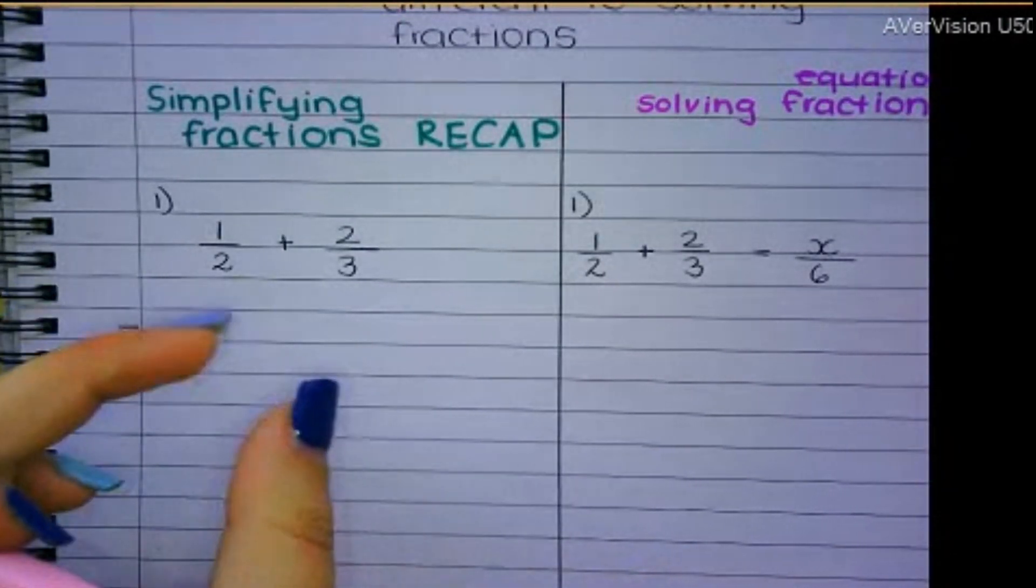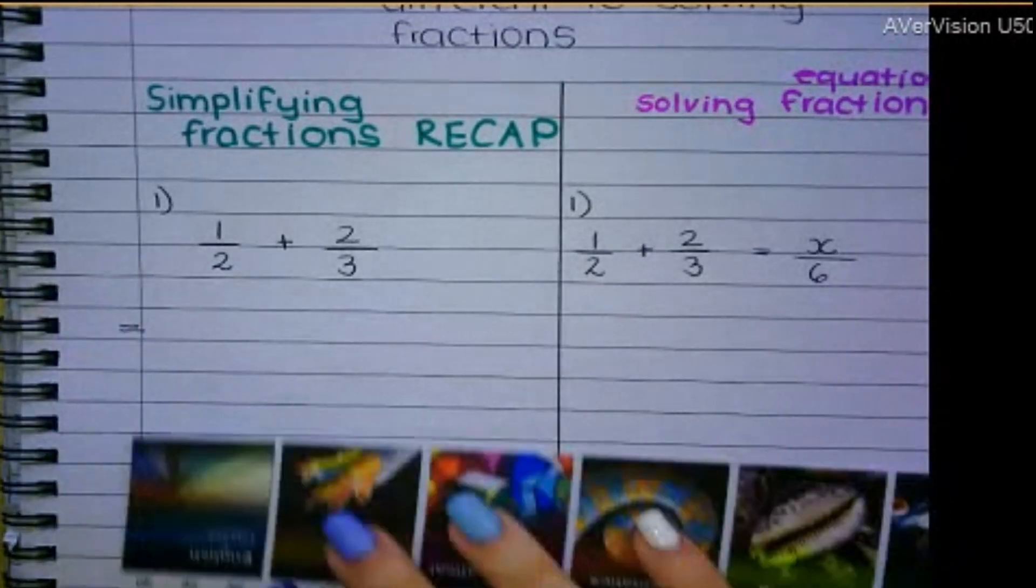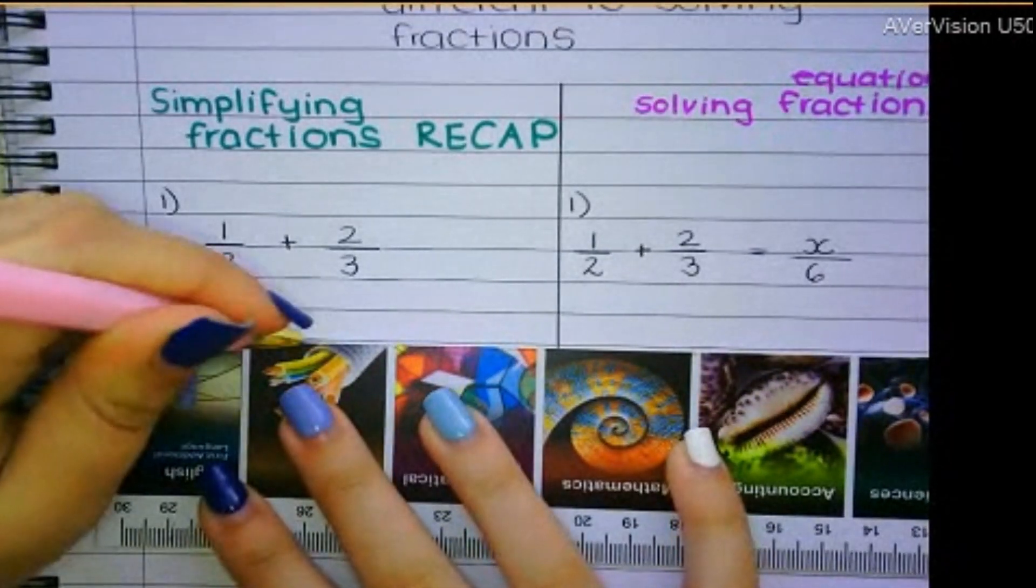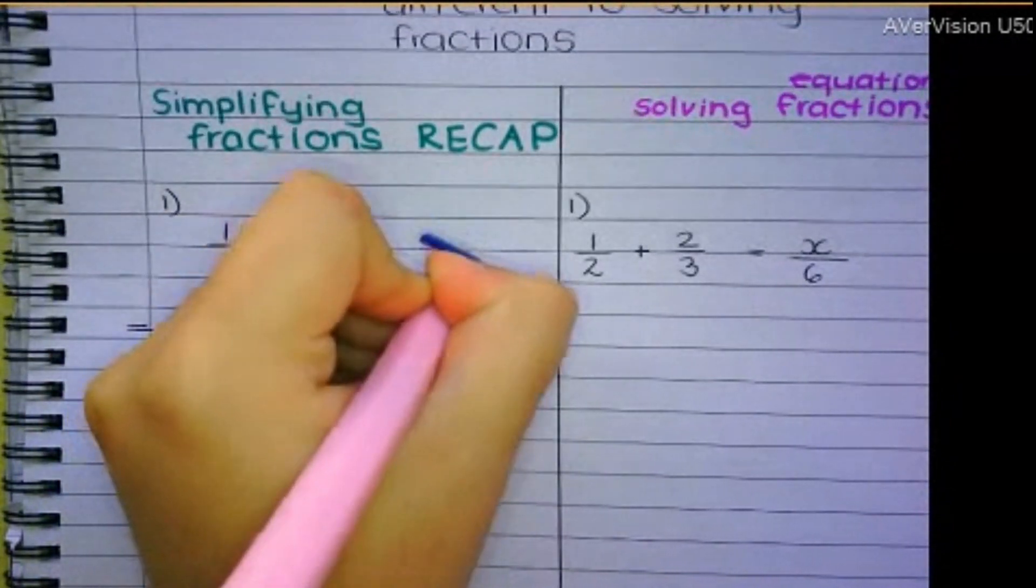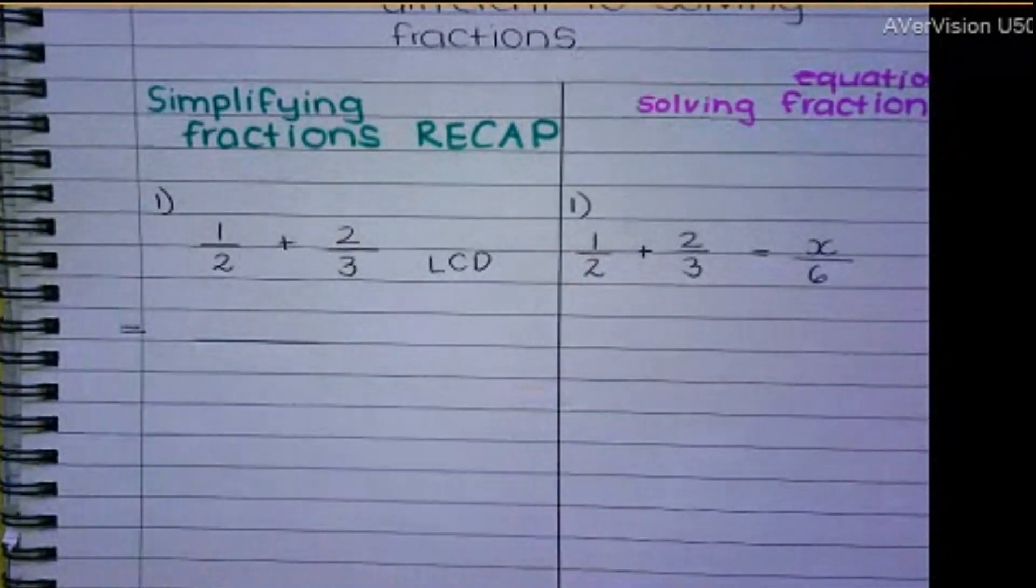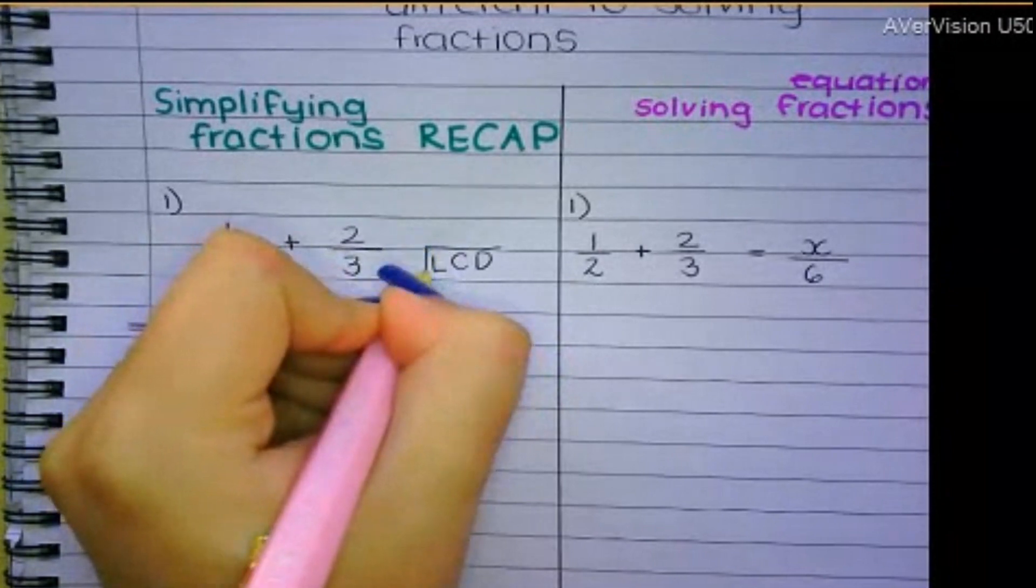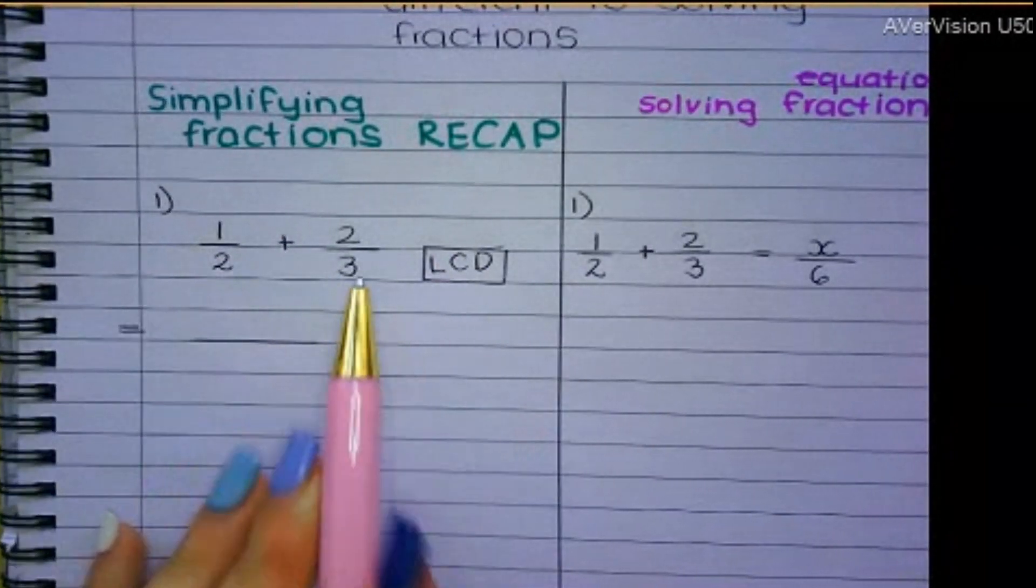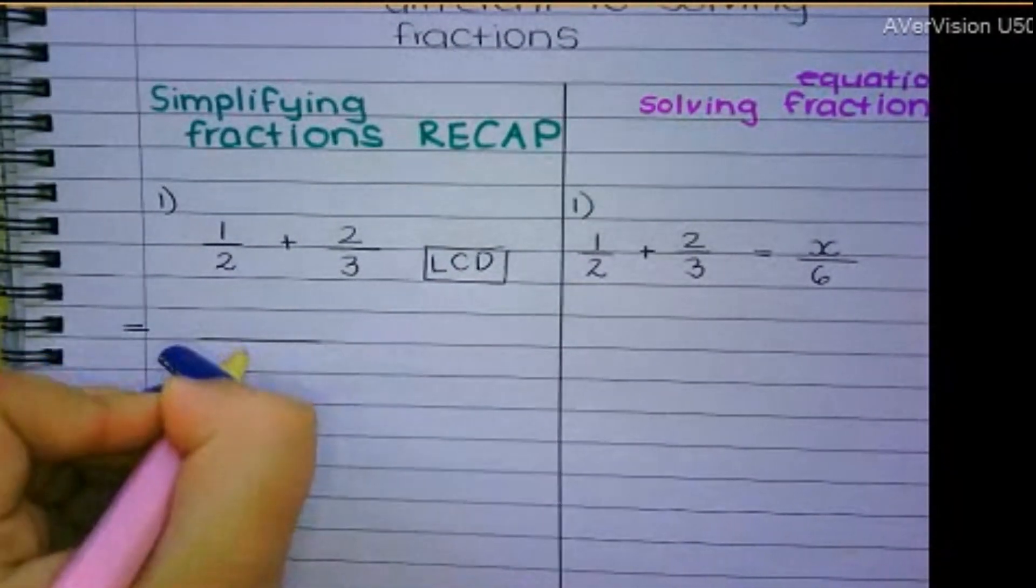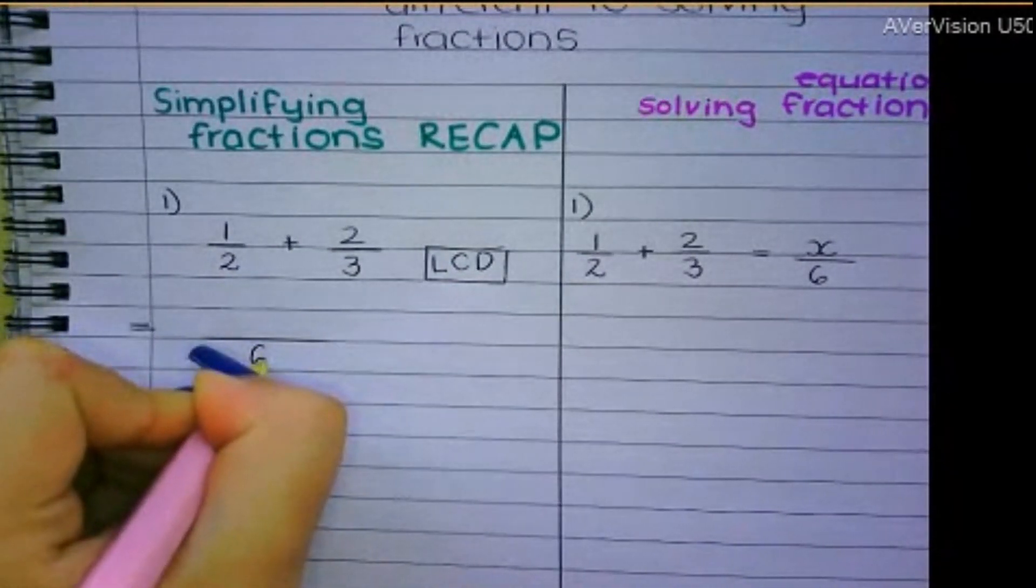How do I do that? Remember, I want to combine it into a single fraction. So I need to find the LCD, the lowest common denominator. So basically, what number can 2 and 3 go into? The lowest number that they can both go into. And it's 6.